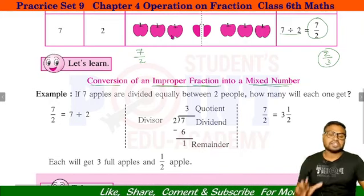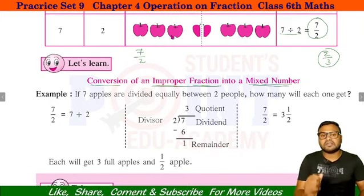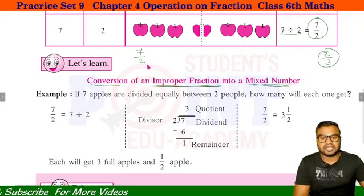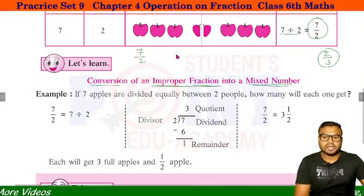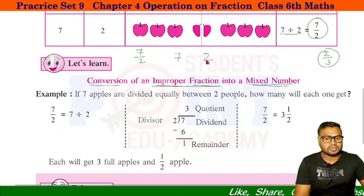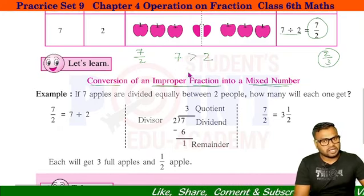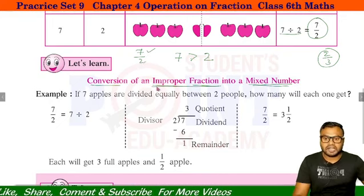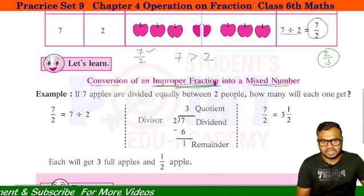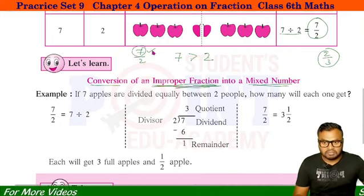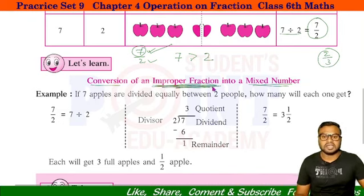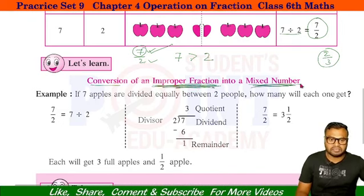आपने Standard 5th में पढ़ा था: A numerator is greater than denominator, then the fraction is Improper Fraction। Numerator मतलब 7 और Denominator क्या है? 2। Numerator, Denominator से बड़ा है। तो जब ऊपर वाला नंबर नीचे वाले नंबर से बड़ा हो जाता है, ऐसे Fraction को हम Improper Fraction कहते हैं। और इसी Improper Fraction को Mixed Fraction में convert करने वाले हैं।